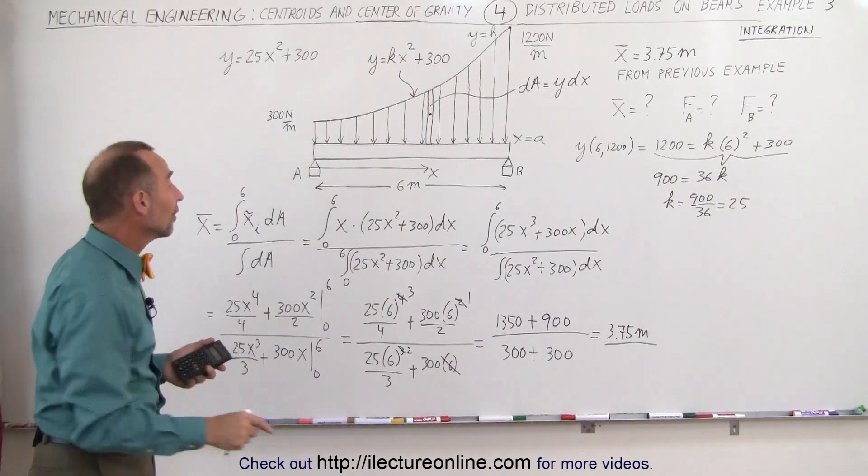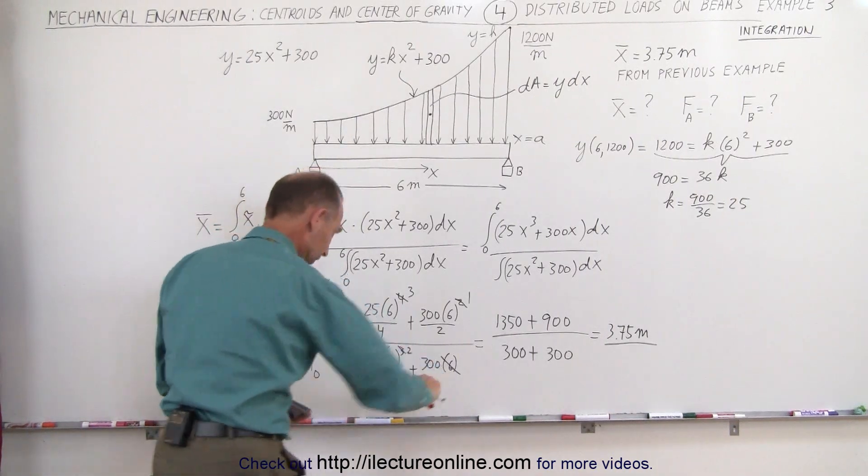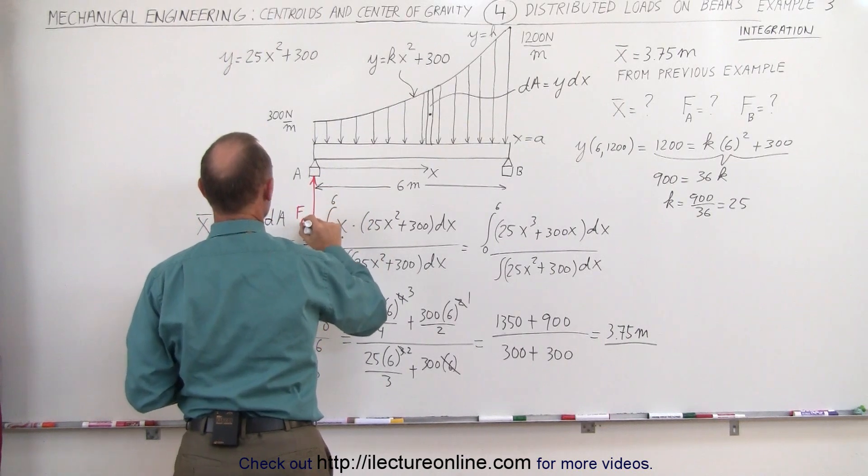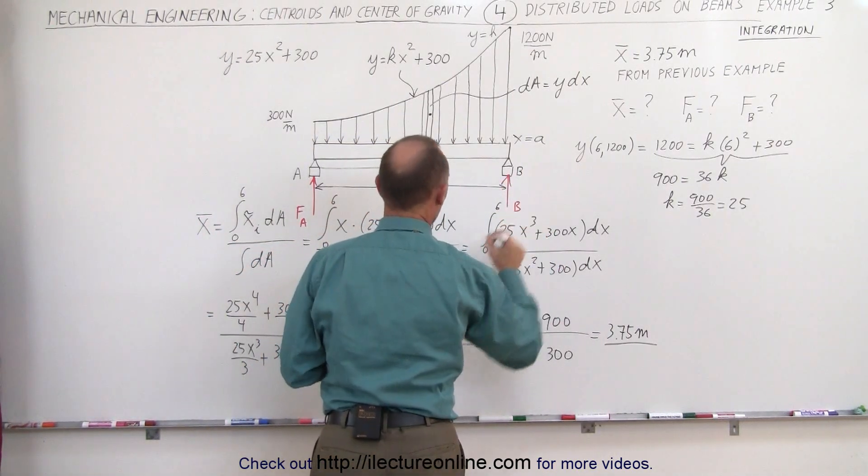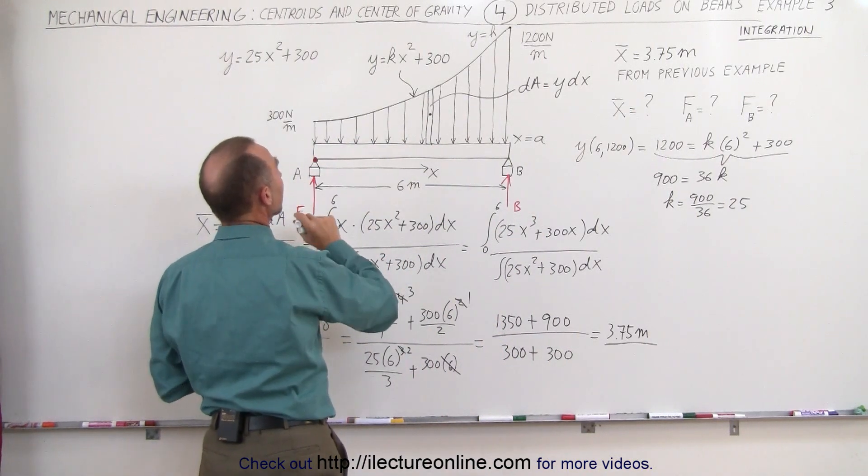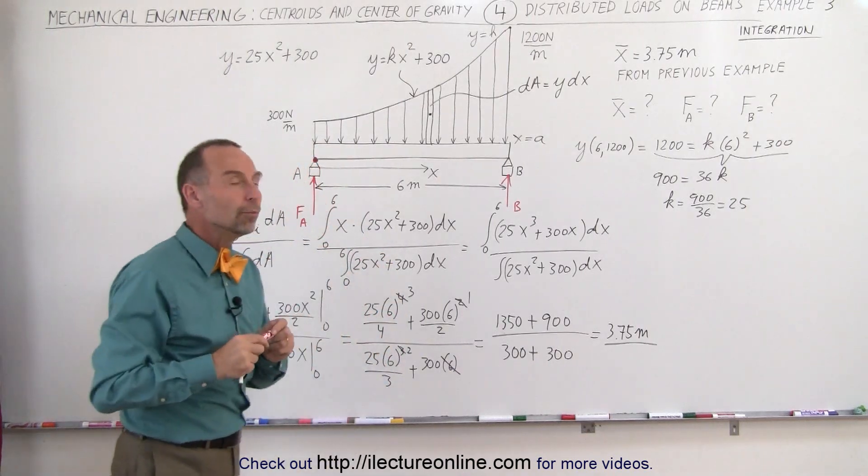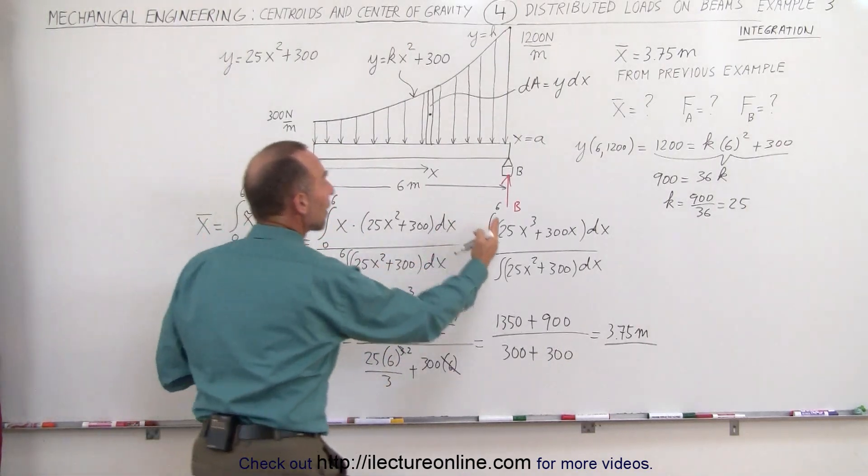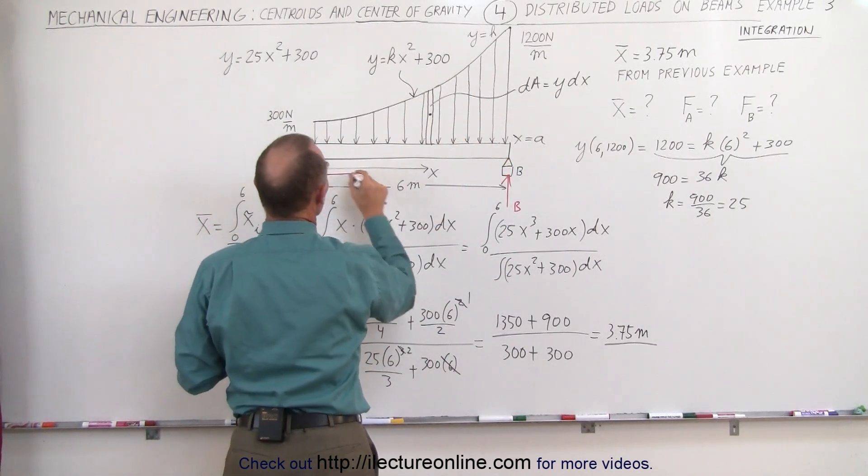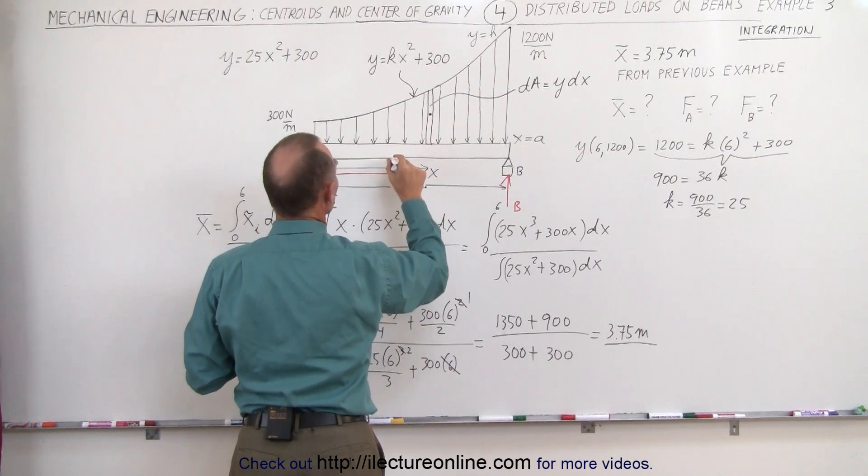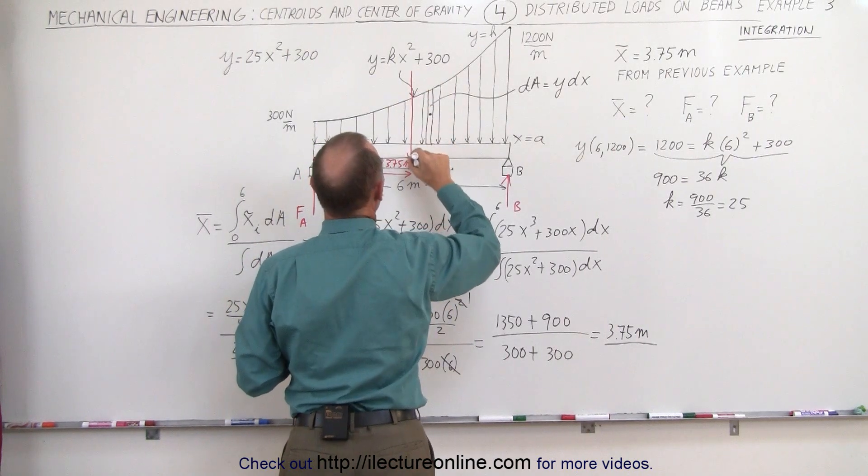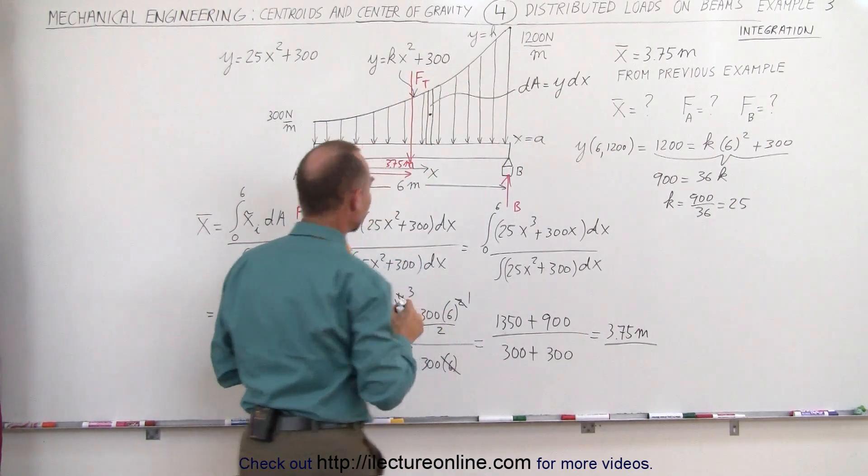The next thing we need to do is find the force at A and the force at B. We're trying to find the reaction force at A and the reaction force at B. What we can do there is assume a pivot point at either A or B. Let's pick A there and then sum up all the moments caused by the two forces. One is the reaction force at B and the other one is the normal force at 3.75 meters away from the left side. So let's say this is 3.75 meters and there we have the total force from the load F total acting on that.